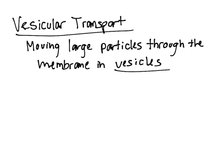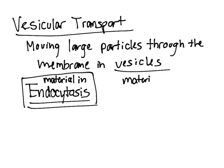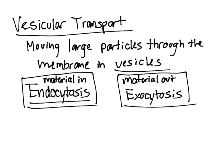There are two types: endocytosis, which brings material in, and exocytosis, where material out. So obviously the cell has waste and stuff that it wants to get rid of, and they could do that by exocytosis.